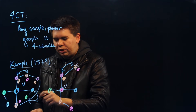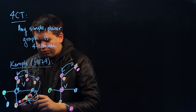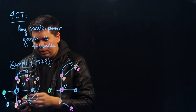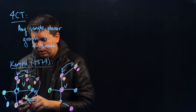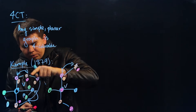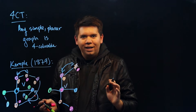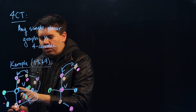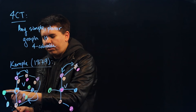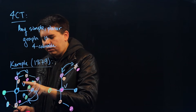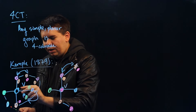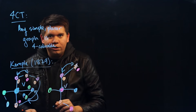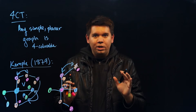We're now free to switch out the blues and greens in one of those chains since they're separate. In this chain on the right, we'll switch out the blues and the greens — recoloring this blue as green and the greens as blues, all the way throughout the chain as far as it might go. Now, V no longer borders a blue vertex. It only borders greens, orange, and pink, freeing us to color V blue.